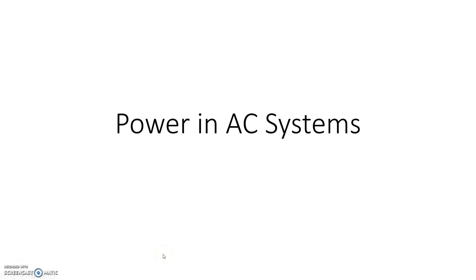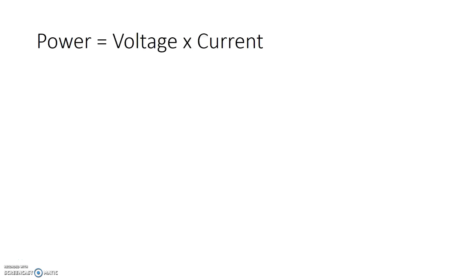Welcome. In this video, we'll talk about power in AC systems. Power is basically voltage times current, and we've looked at it plenty of times when we've done DC circuits. Now, in an AC circuit, or sinusoidal steady state circuit, we have voltages and currents that are both sinusoidal in nature.